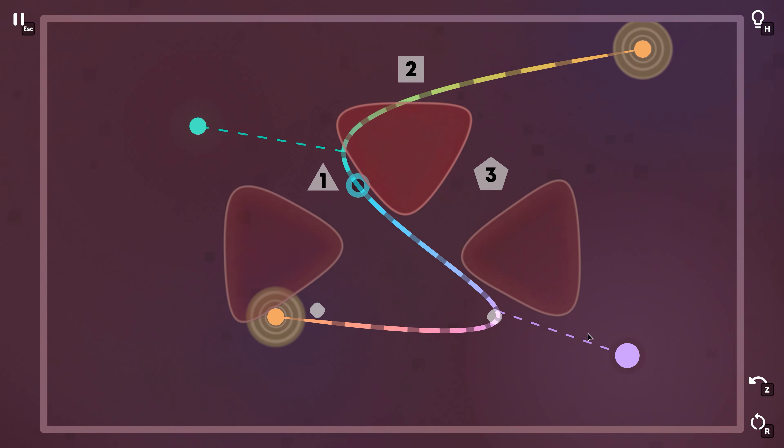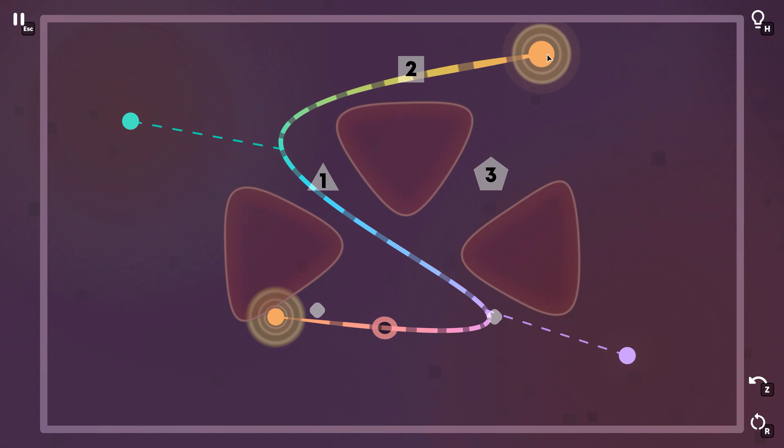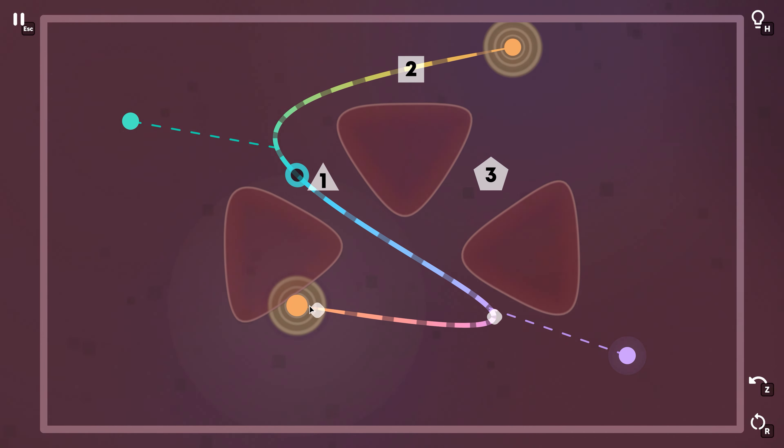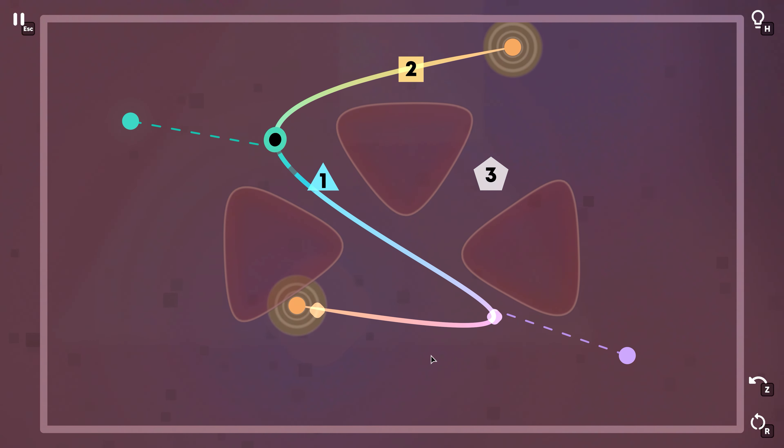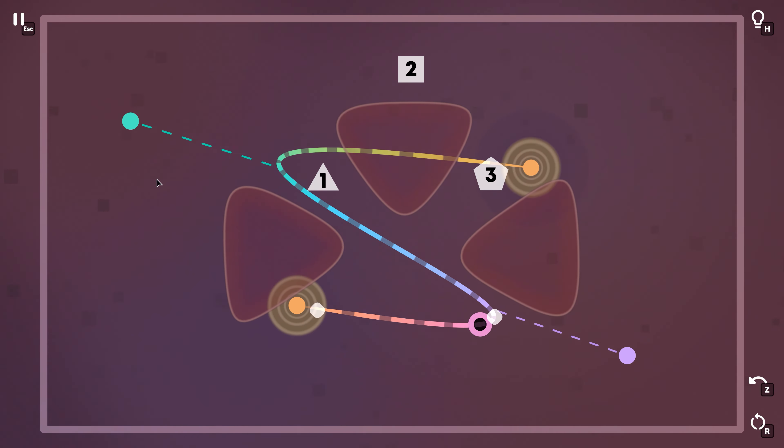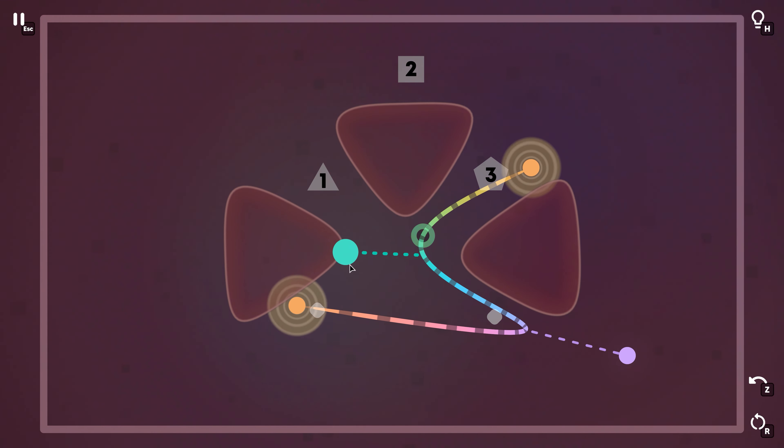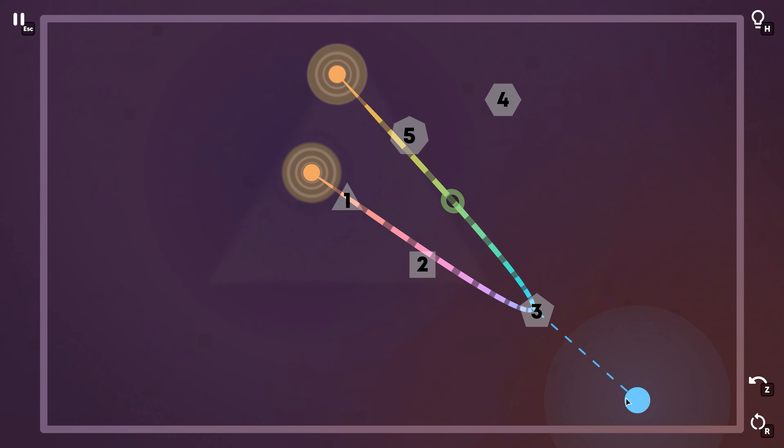To borrow the explanation of Oros from its official itch page, Oros is a calming puzzle game about forming beautiful curves in a serene space. Find your flow as you nudge, bend, and stretch curves into pleasing shapes. The goal is simple, align the curve with the targets, then watch the orb gracefully glide through them. That really does sum up exactly what Oros is.